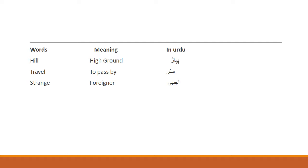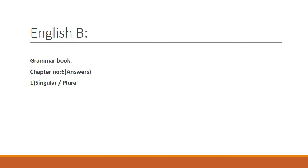Sabse pehla word hai aapke paas hill — hill ka matlab hota hai high ground, pahad. Travel — travel means to pass by, a journey. Strange — strange means foreigner, ajnabi. Yeh aapne words meanings apni copies mein write down karne hain aur inko acche tarike se yaad karna hai.